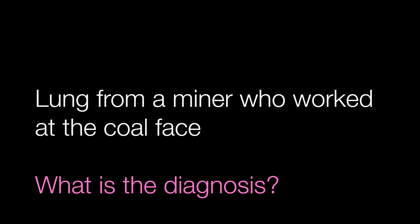The first case is a slice of lung from a coal miner who worked at the coal face. What is the diagnosis? As we zoom into this lung you can see the background lung parenchyma shows anthracotic mottling, but there is a more solid black lesion towards the centre of the picture. What is it?